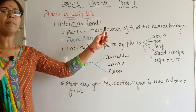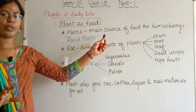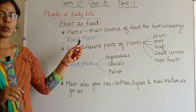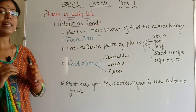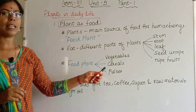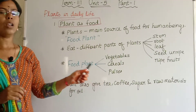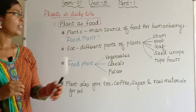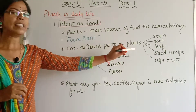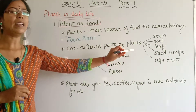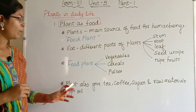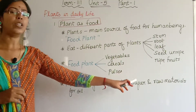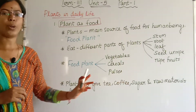Plants are human beings' main source of food — that is why they are called food plants. We classify them into vegetables, cereals and pulses. We eat different parts of a plant: stem, root, leaf, seed and ripe fruits. Plants also give us tea, coffee, sugar and raw materials for oil.